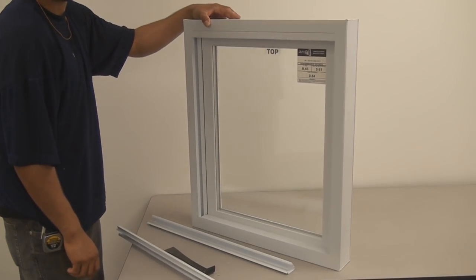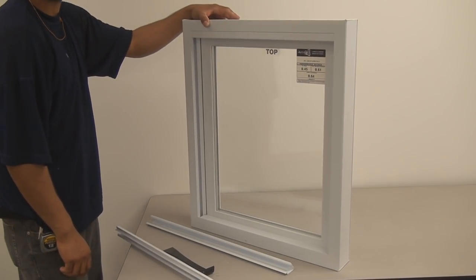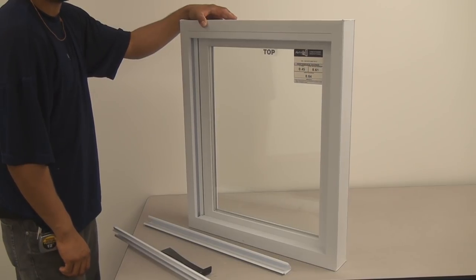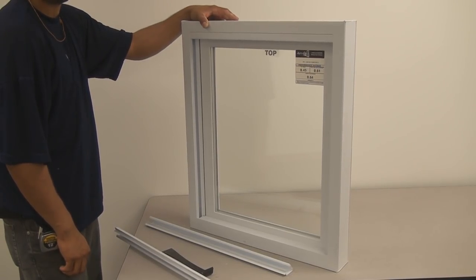Lange does not recommend screwing through the bottom sill. You can drill through the top, but be careful that you don't bow the window.